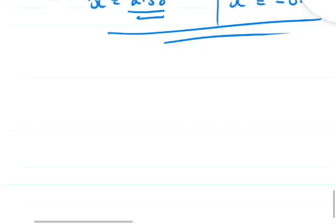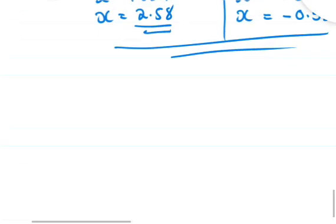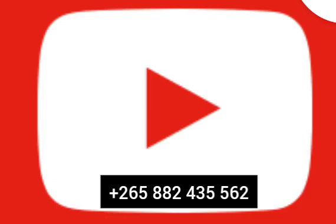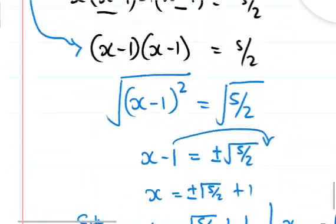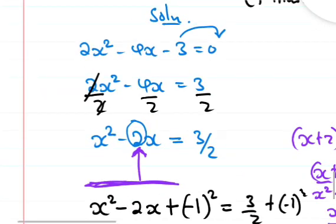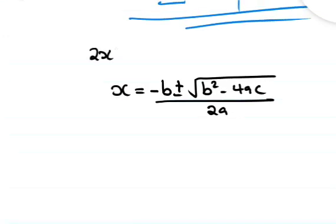Now we will also solve this using the quadratic formula. The quadratic formula is: x equals negative b plus or minus the square root of b squared minus 4ac, all over 2a. For our equation 2x squared minus 4x minus 3 equals zero.